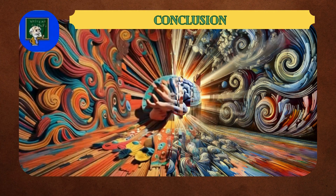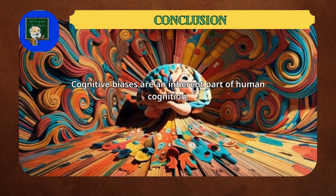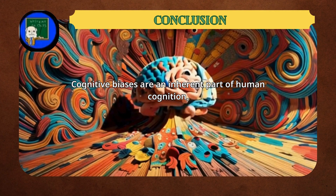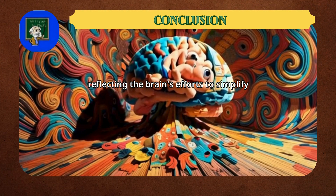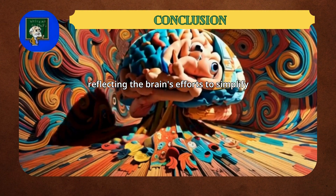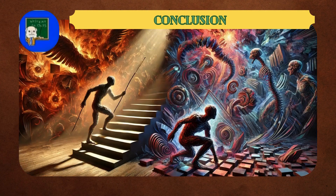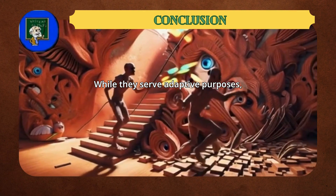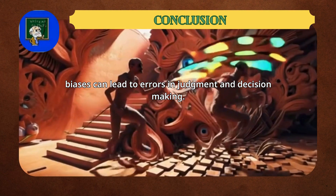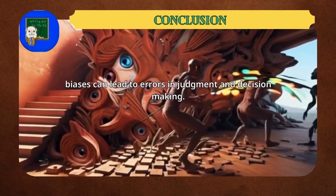Conclusion: cognitive biases are an inherent part of human cognition, reflecting the brain's efforts to simplify complex information. While they serve adaptive purposes, biases can lead to errors in judgment and decision-making.